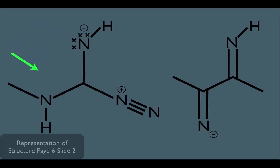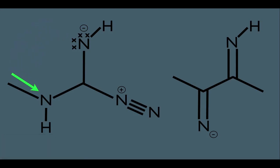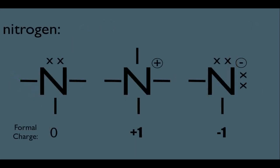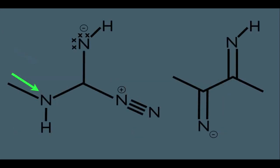Now let's look at this nitrogen right here. Notice it has no formal charge. What does it take for nitrogen not to have a formal charge? Remember, that means it's going to have a total of three bonds and one lone pair. Going back, we see the three bonds that it has. Therefore, the only thing this structure is missing is its lone pair.